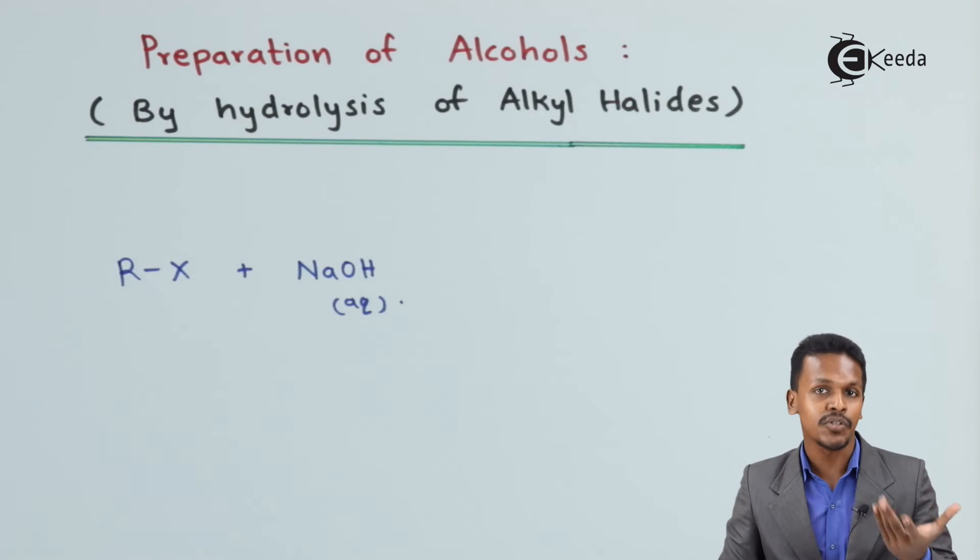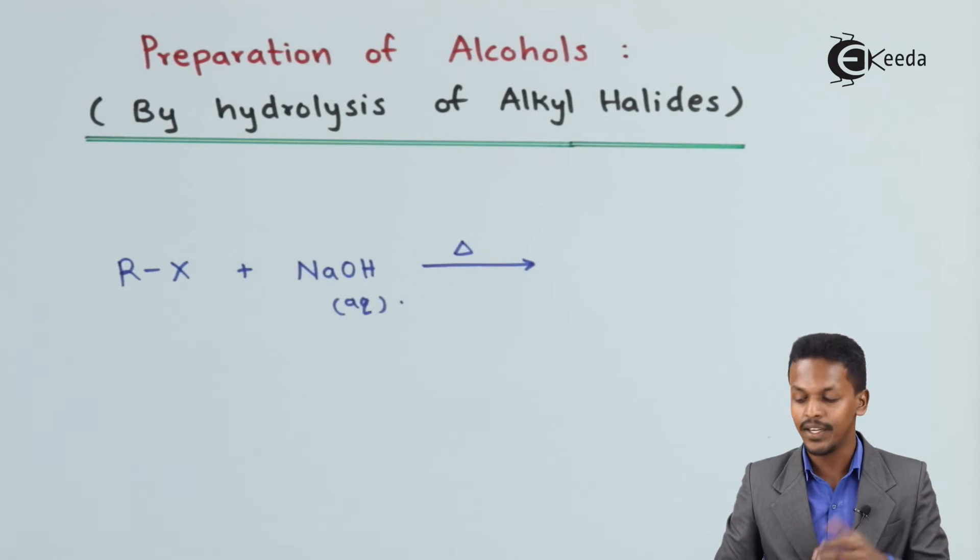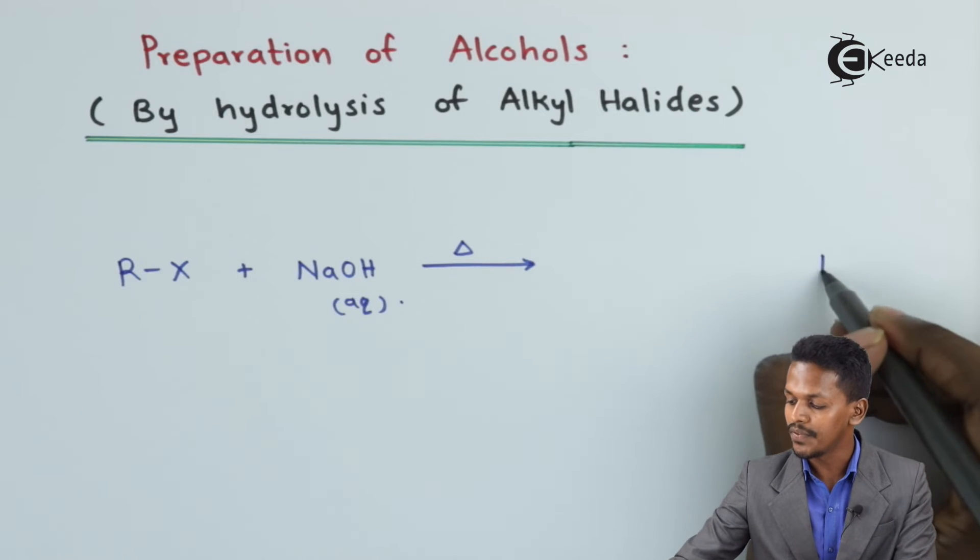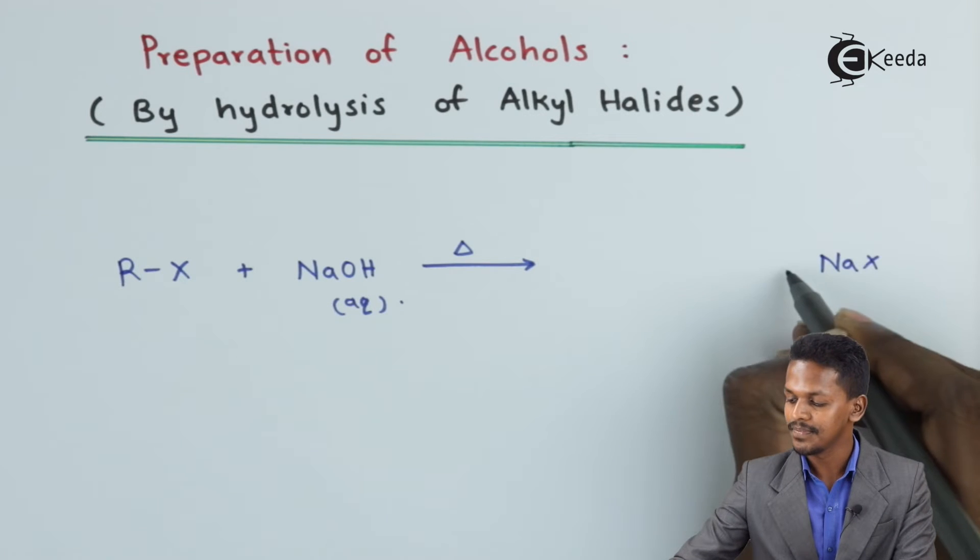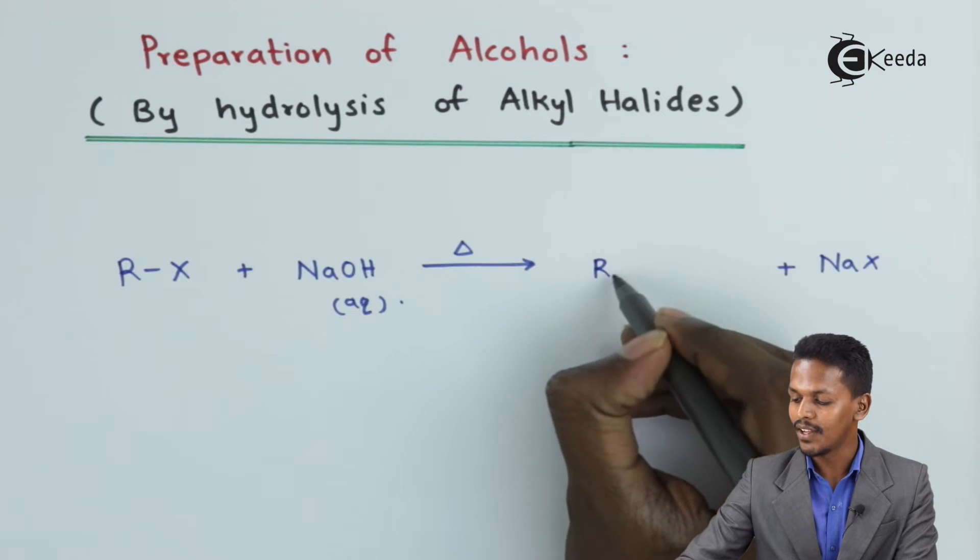In this case, a substitution reaction will happen. If we provide a certain amount of heat, Na will take out this X in the form of NaX, and the main product that we need is an alcohol, R-OH.